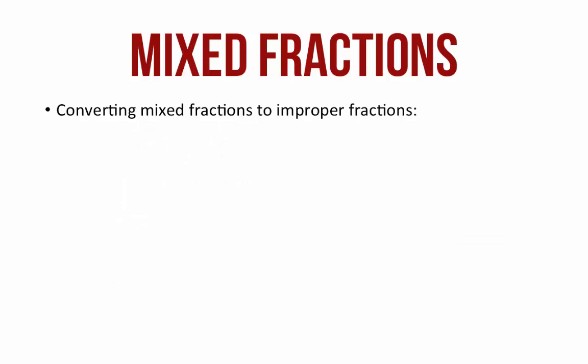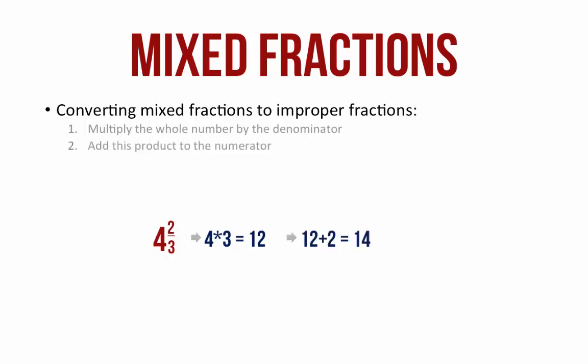Let us look at how to convert mixed fractions into improper fractions. Let's take the example 4 and 2 by 3. We multiply the whole number, which is 4, by the denominator 3. 4 times 3 is equal to 12. We add this product to the numerator 2, so 12 plus 2 is equal to 14. The sum is the new numerator. Therefore, the fraction is 14 by 3.